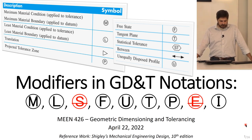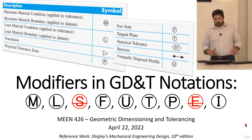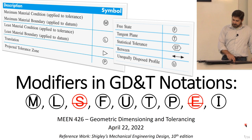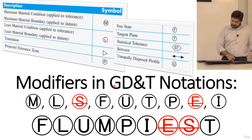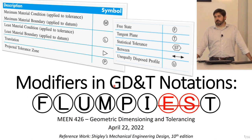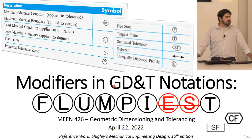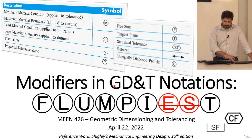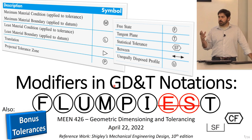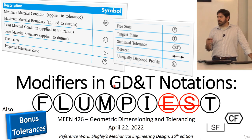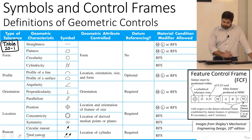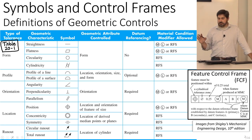This is probably my flumpiest presentation. A few of the other things we're going to talk about are some notations that are not technically modifiers, and then we have another big aspect called bonus tolerances. This is another term you'll see in a lot of GD&T parlance, and I'm going to explain what we mean by bonus tolerances today.